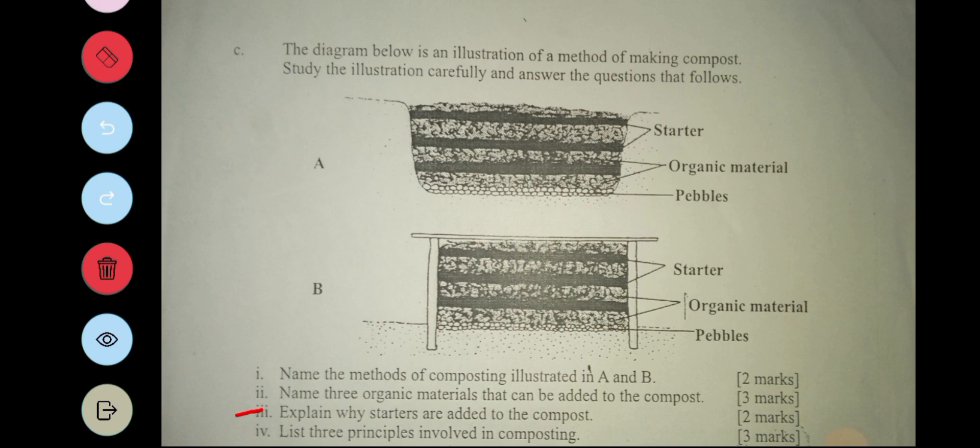Then part four says: state three principles involved in composting. Adequate aeration, then proper moisture level, and also the right carbon to nitrogen ratio.